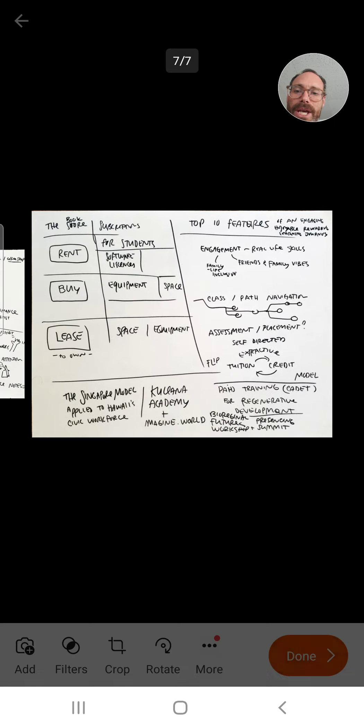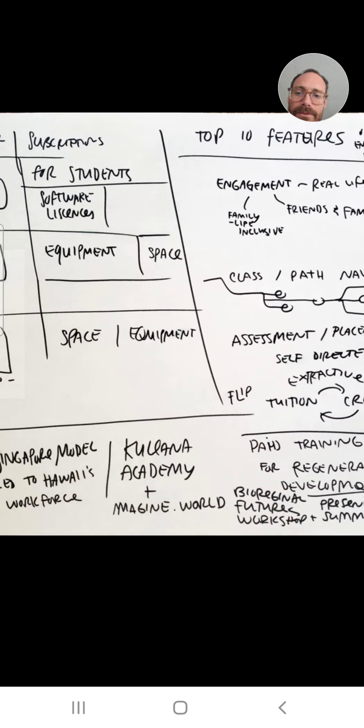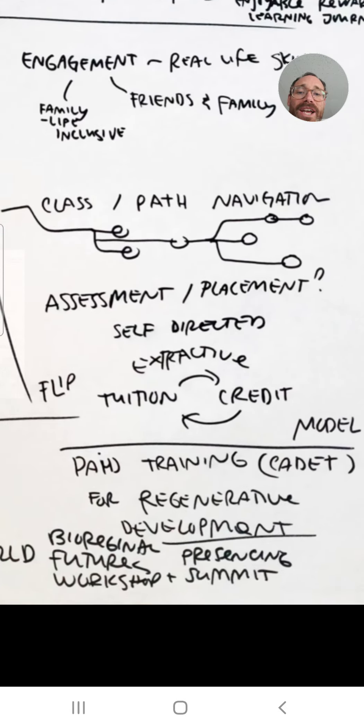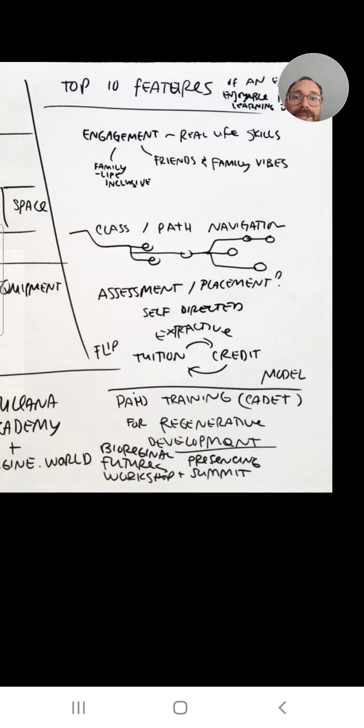Because it could be just badges. Here's more radical thinking about the educational model - can we flip the extractive credit model where you pay tuition for credits? Instead, we actually pay you for credits - it's paid cadet training for retirement development.